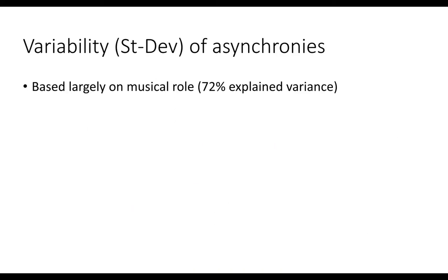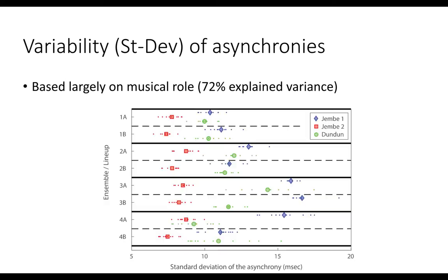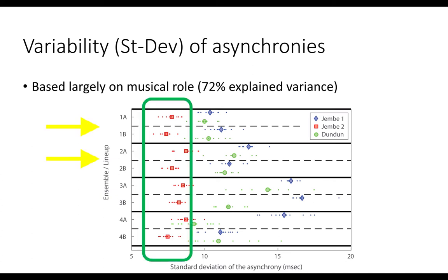In a first step of analysis, we established with a mixed effect model that the variability of asynchronies is based largely on musical role and not on differences between ensembles or individual players. For example, looking at the standard deviations of asynchronies, we found that the second djembe, which plays the accompaniment role, consistently shows the least degree of variability across ensembles and across role switching within ensembles.